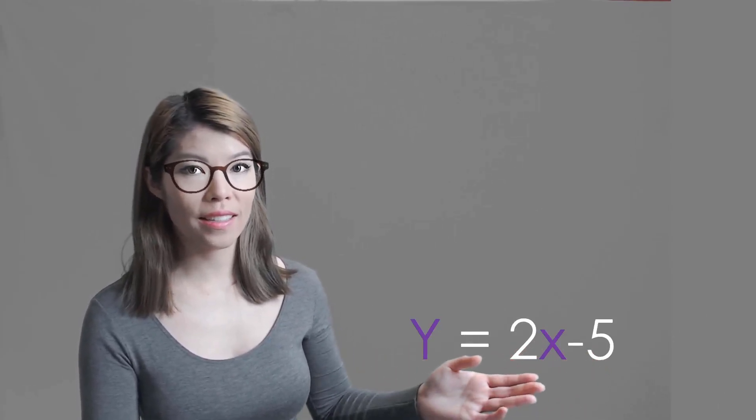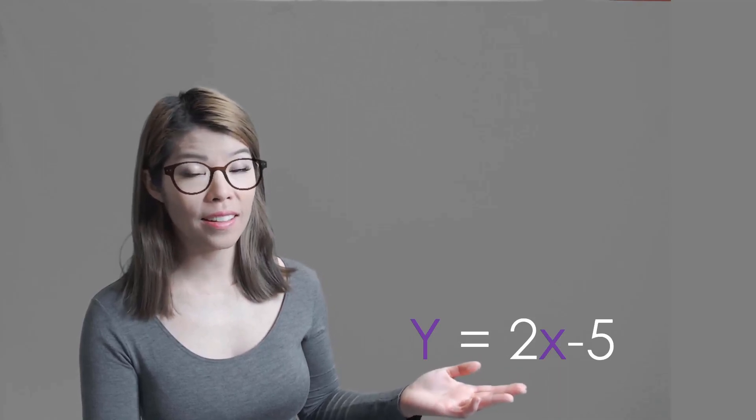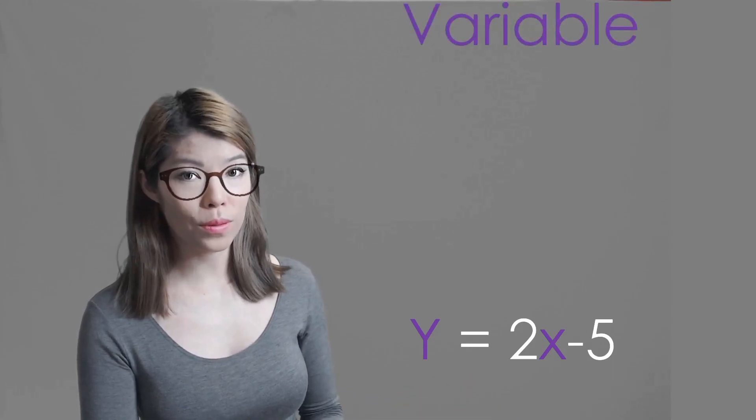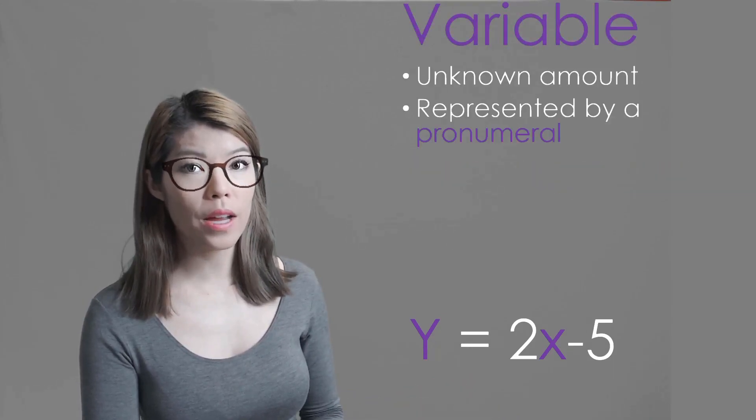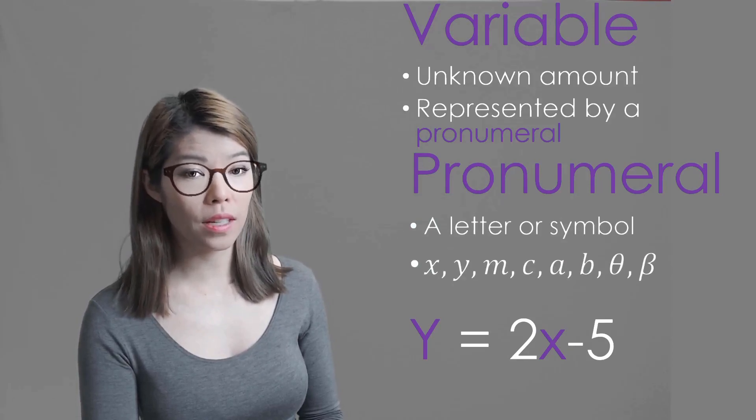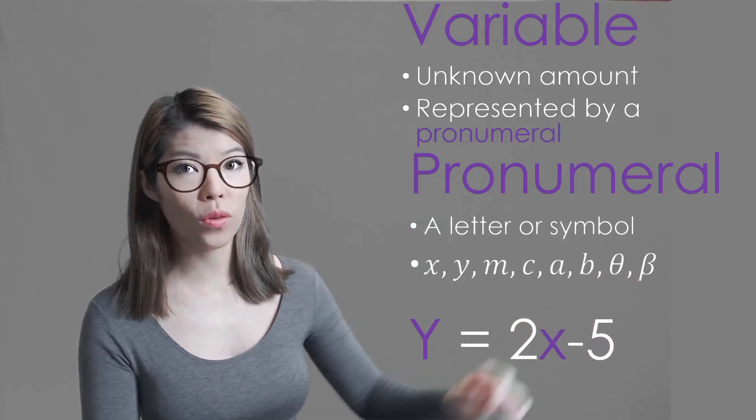Now the y and the x are unknown amounts and they can also change, or in other words they vary. So we call these variables and they're represented by pronumerals. They are letters and symbols, and sometimes you might have seen them as theta when we represent angles.